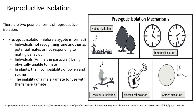Pre-zygotic isolation can also occur when individuals are physically unable to mate — particularly in animals — simply because their genitals might not be adapted to each other. In plants, you can have the incompatibility of pollen and stigma, and sometimes also the inability of a male gamete to fuse with a female gamete.